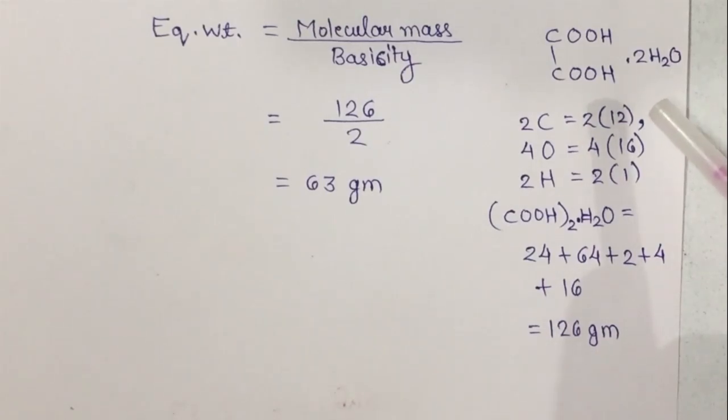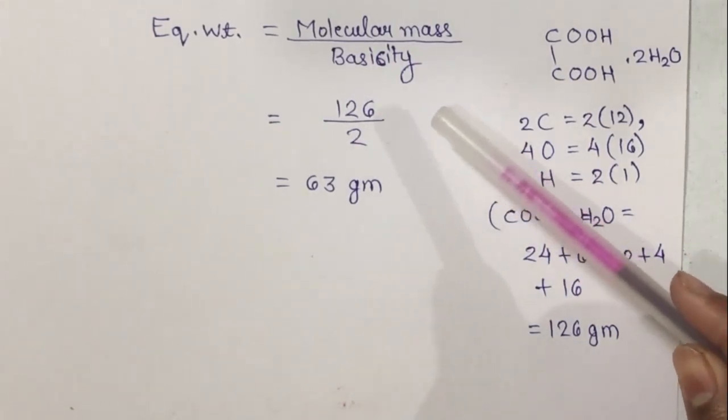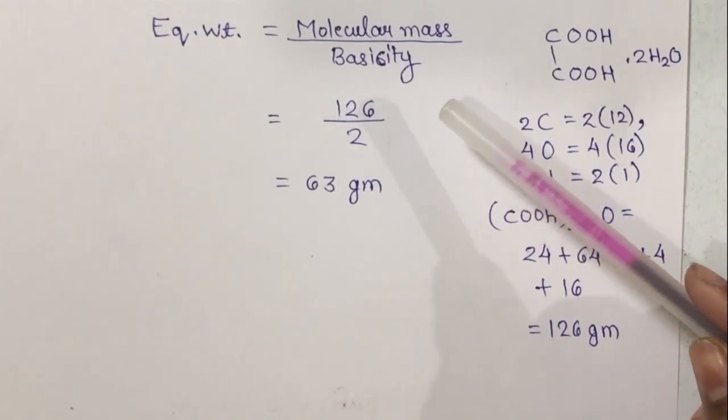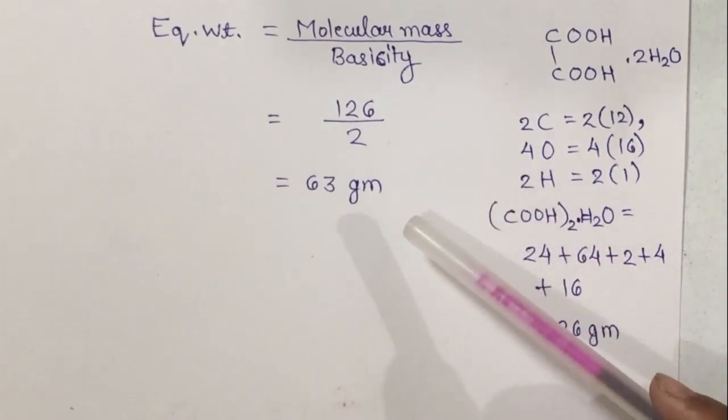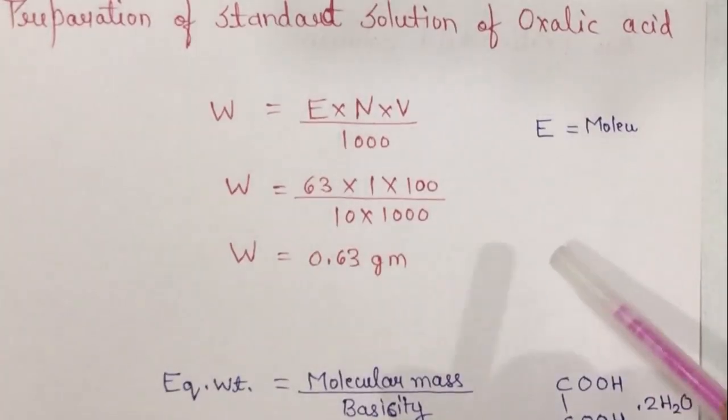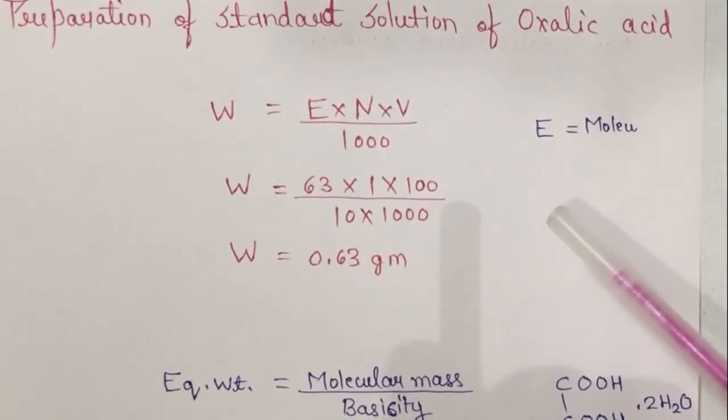Molecular mass for oxalic acid is calculated using the formula. We know that the formula of oxalic acid is COOH taken twice dot 2H2O. We have 2 carbon, 4 oxygen, 2 hydrogen, and by putting the molecular mass of all the elements we get 126 grams as the molecular mass of oxalic acid. Putting this value in the given formula, we are putting 126 grams in place of molecular mass and basicity is 2 for oxalic acid, then we get 63 grams as the equivalent weight. After putting the value of E, N, and V, we get W equals 0.63 gram as the weight for oxalic acid.